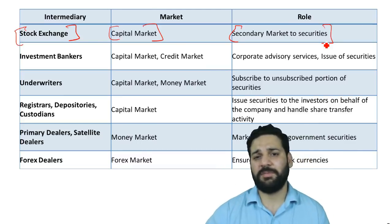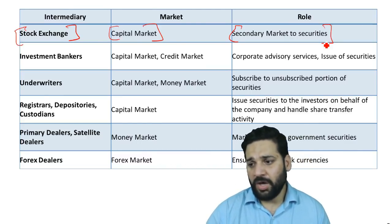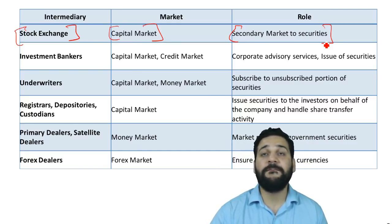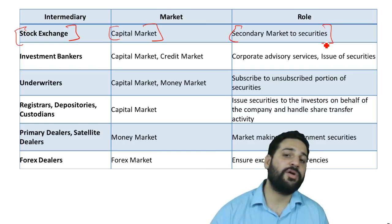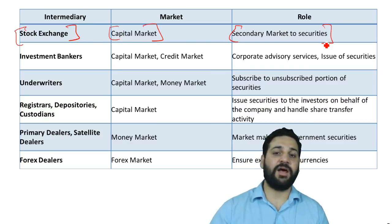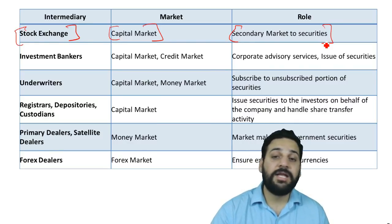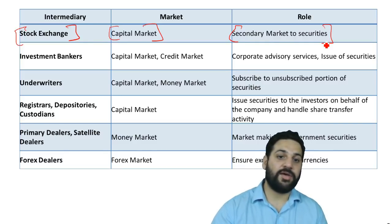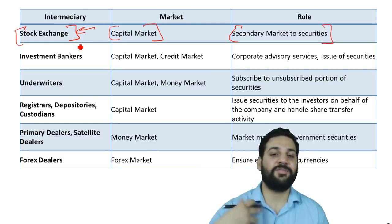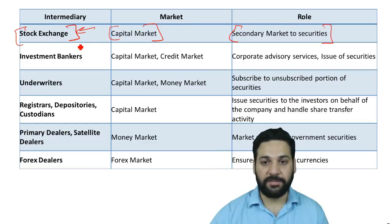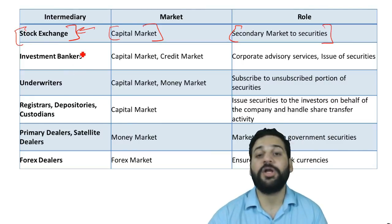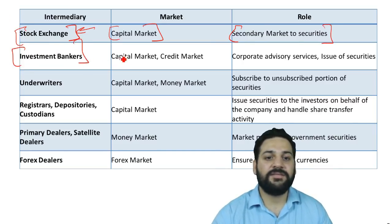The difference between the primary market and the secondary market: when a company issues shares or a government issues bonds, that is the primary market. Once shares are issued, if I hold shares of HDFC Bank and need money, I can sell them on a stock exchange to another investor — not back to HDFC Bank. That is the secondary market. Stock exchanges act as a secondary market, not a primary market.